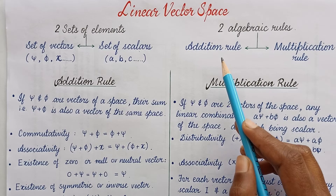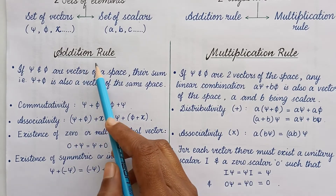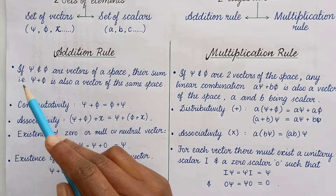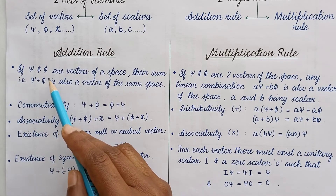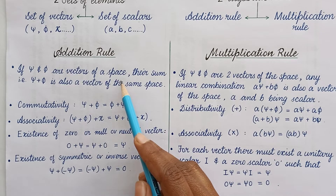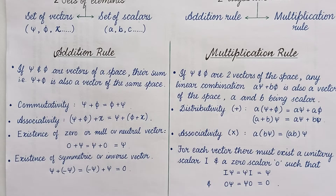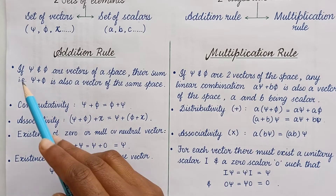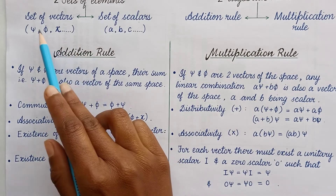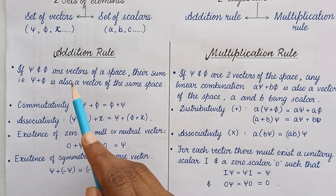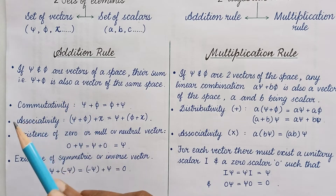Understanding the properties of these algebraic rules: firstly, the addition rule. The addition rule has the property and structure of an abelian group. The first property is: if psi and phi are vectors of a space, their sum psi plus phi is also a vector of that same space. So if we add these two vectors, we get a resultant vector r, and that r will also belong to this vector space.